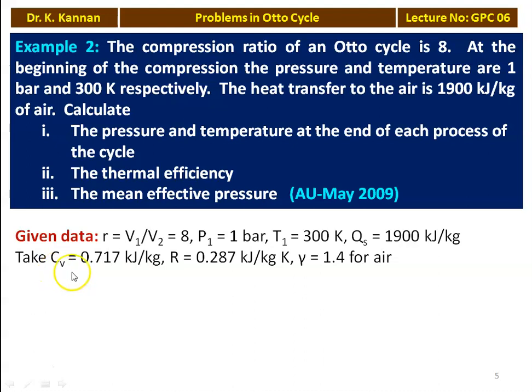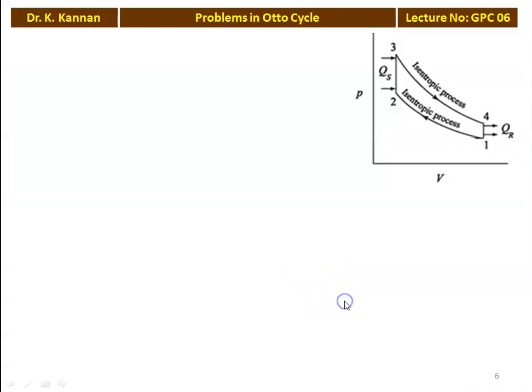We take Cv equals 0.717 kJ/kg·K and gamma equals 1.4 for air. The PV diagram of the Otto cycle shows: 1 to 2 isentropic compression, 2 to 3 constant volume heat addition, 3 to 4 isentropic expansion, and 4 to 1 constant volume heat rejection.